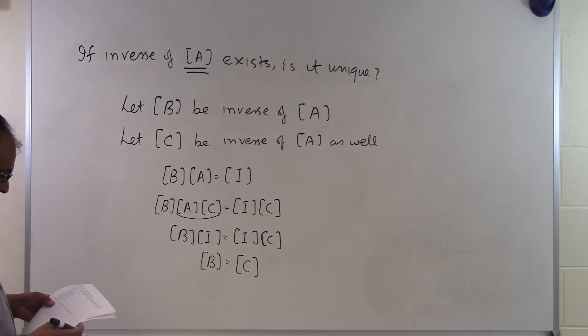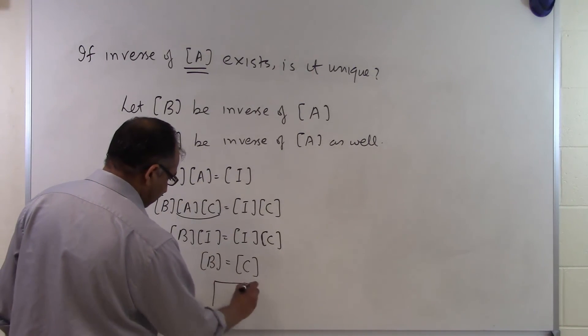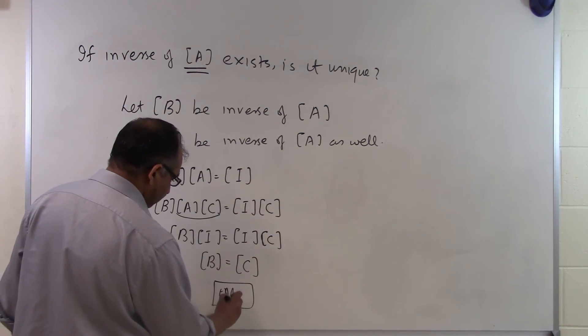So this is showing us that B and C are the same, which basically shows that if there is a matrix A and it has an inverse, that inverse is unique. And that's the end of this segment.